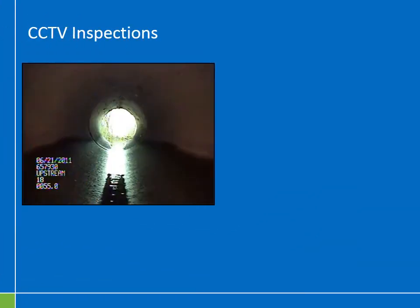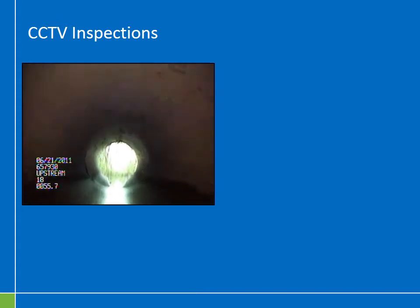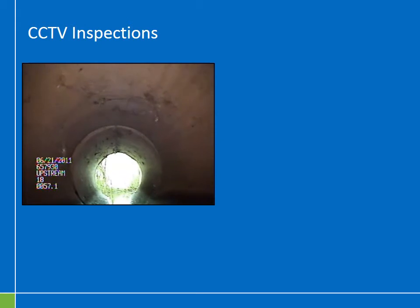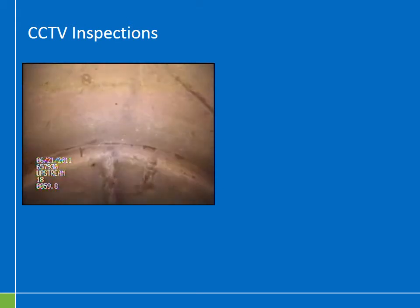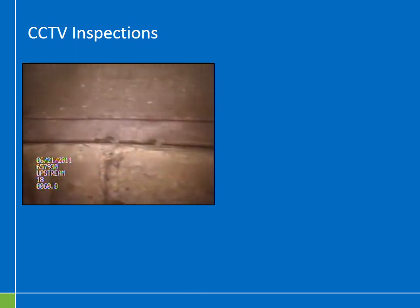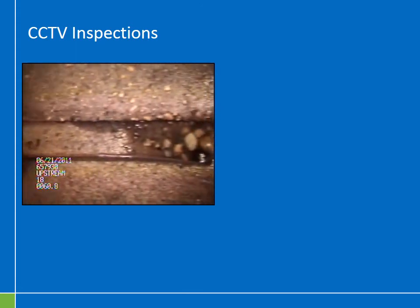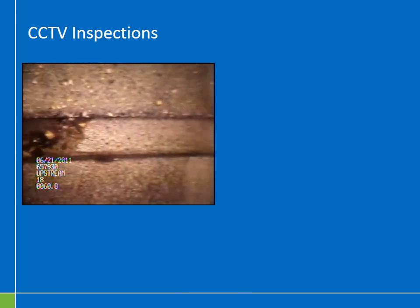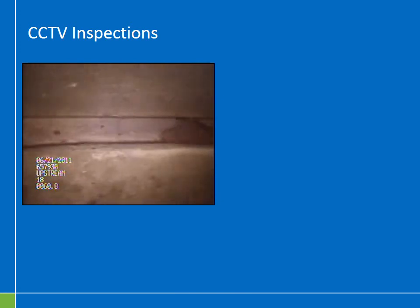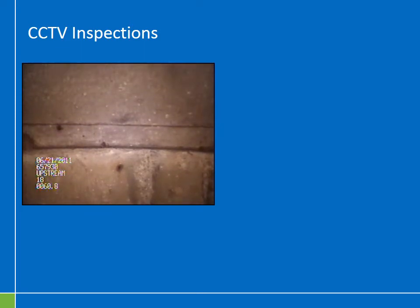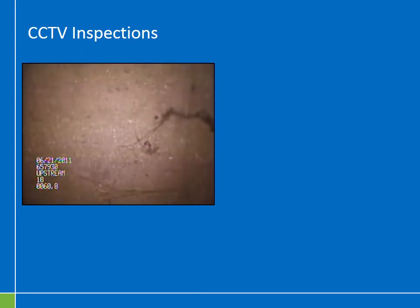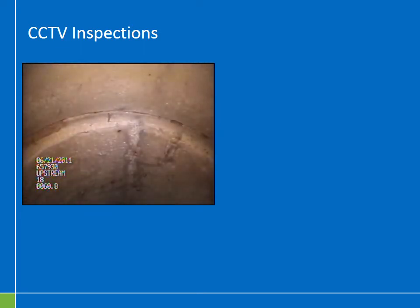This is an example CCTV video recorded by MnDOT. The video is in high definition. The operator has deployed the camera in the culvert and is starting to drive down it. As he gets to a joint, he makes an observation about the joint's condition, stops the camera, pans it, and then tilts the camera in a 360-degree sweep to obtain full video documentation of that joint's condition.